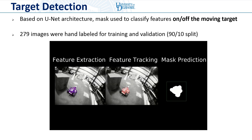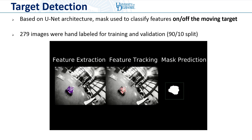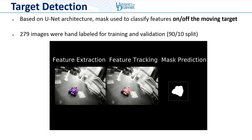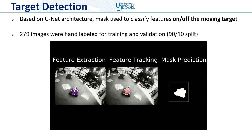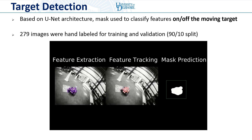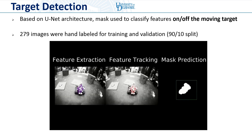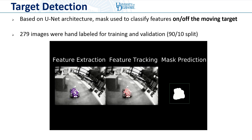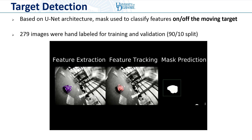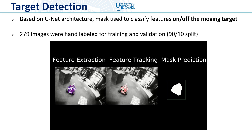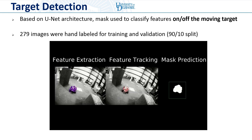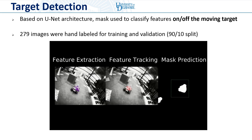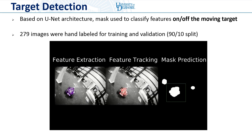In order to validate our proposed system in a real-world scenario, we need to be able to distinguish in a given image stream what pixels correspond to the target and which correspond to the static environment, in order to partition our tracked features into two sets. To do this, we labeled a series of pictures of an RC car and from this trained a network to output a mask prediction, which tells us which pixels in the image correspond to the target and which do not.